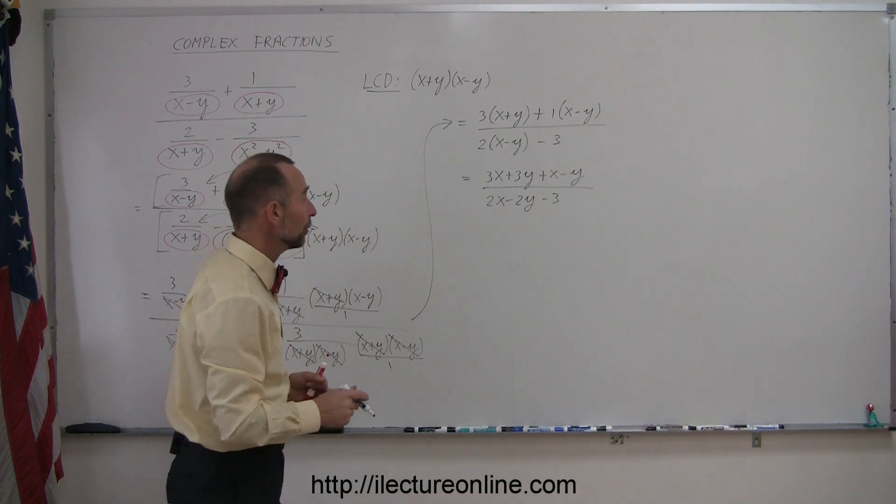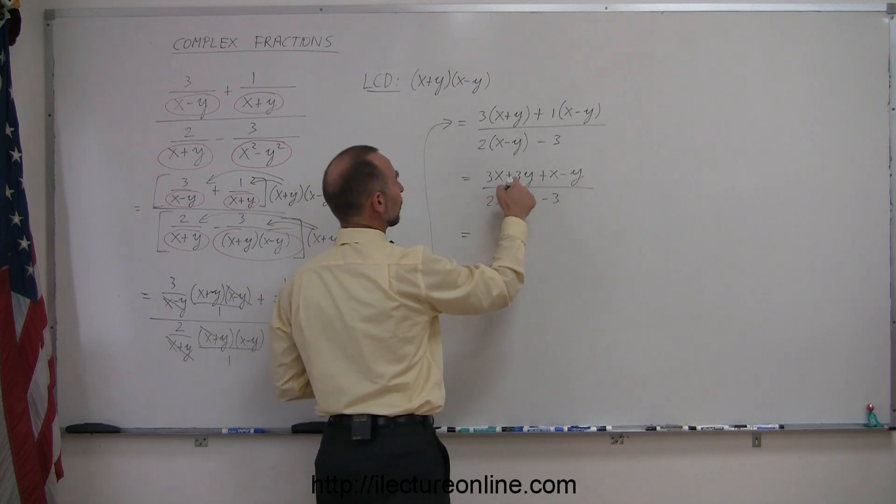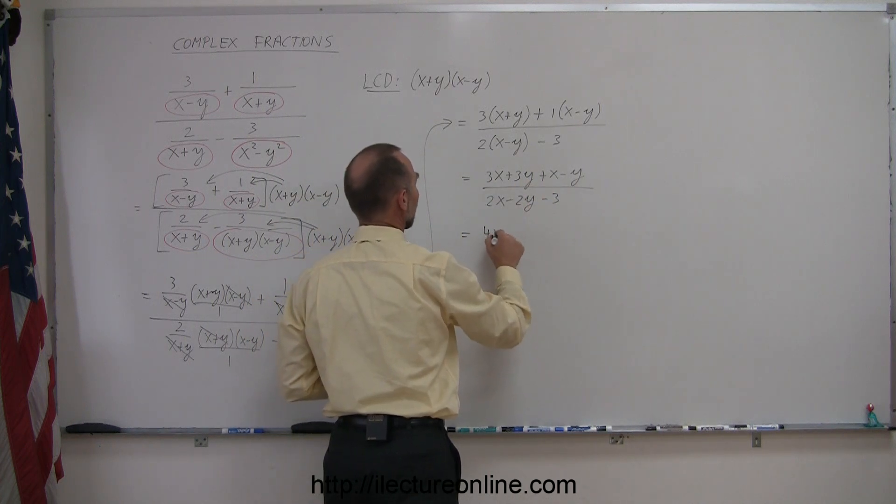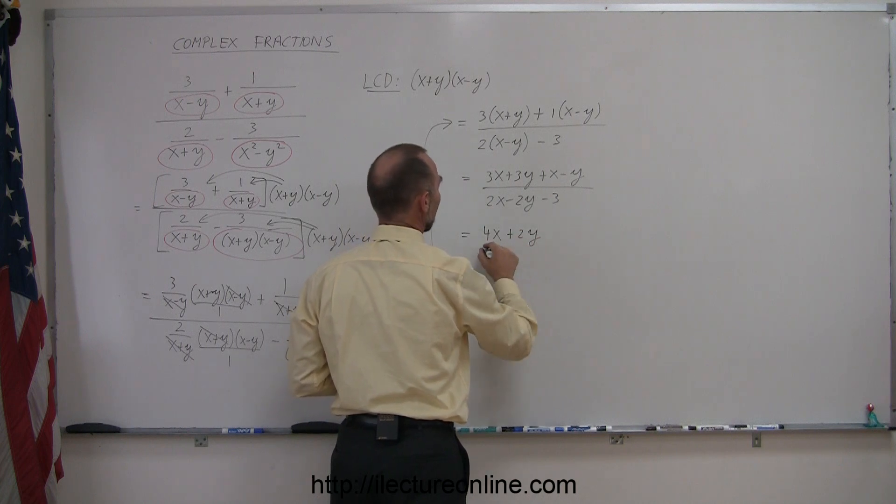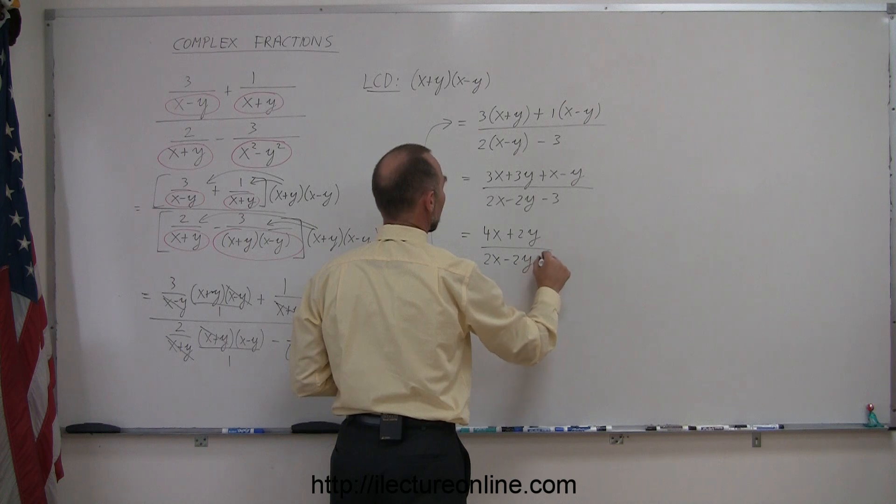And then, collecting common terms, 3x plus x is 4x, 3y minus y is plus 2y, and here we have a 2x minus 2y minus 3.